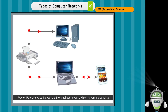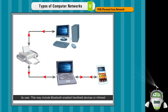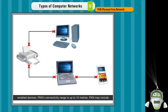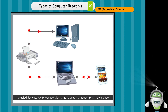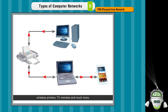PAN – Personal Area Network. PAN or Personal Area Network is the smallest network, which is very personal to its user. This may include Bluetooth-enabled handheld devices or infrared-enabled devices. PAN's connectivity range is up to 10 meters. PAN may include wireless computer keyboard and mouse, Bluetooth-enabled headphones, wireless printers, TV remotes, and much more.